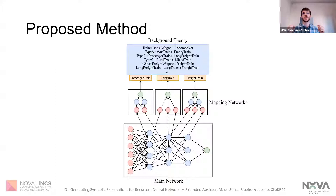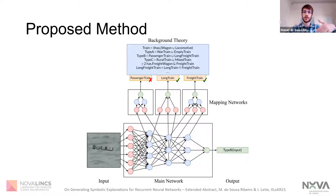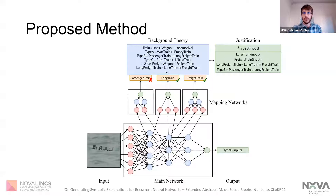We propose to establish this mapping through the use of what we call mapping networks. These are small neural networks trying to identify single concepts from the activations of a trained neural network. Through these mapping networks, when input is fed to the neural network whose output we want to justify — which we refer to as the main network — we can output observations regarding whether different concepts were observed or not in the activations of this neural network. Using these observations together with our background theory, we can reason to produce symbolic justifications for the output of our neural network. These justifications would be minimal subsets of axioms or rules from our background theory that, together with the outputs of our mapping networks, would allow us to entail the output of our main network.